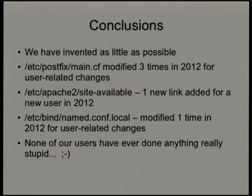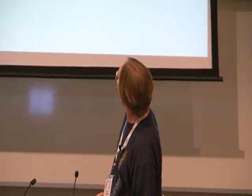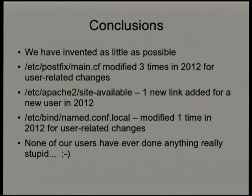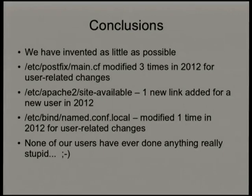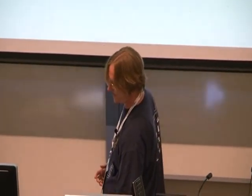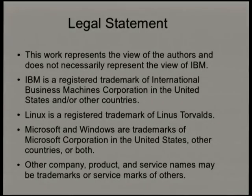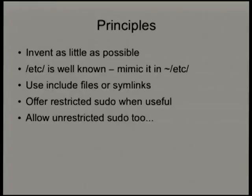So we've invented as little as possible — it's all totally uninspiring. The main Postfix config file was modified three times last year, even though we added a bunch of users and domains. The Sites Available directory for Apache got one new symlink last year. And named.conf.local got modified one time in 2012 for user-related changes. None of our users have ever done anything really stupid — the only person who nearly accidentally rebooted the box couldn't figure out why the password wouldn't work, said 'oops,' hit Control-C, and everything survived.